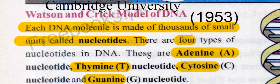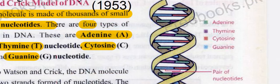This is the definition of nucleotides — how many types there are and how many nucleotides are present. There are two strands in a DNA molecule.